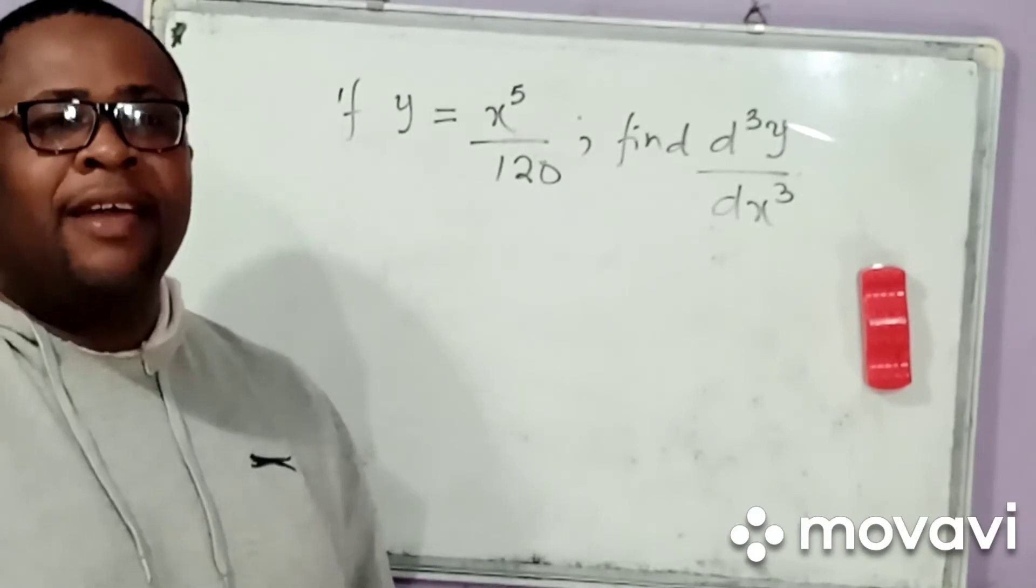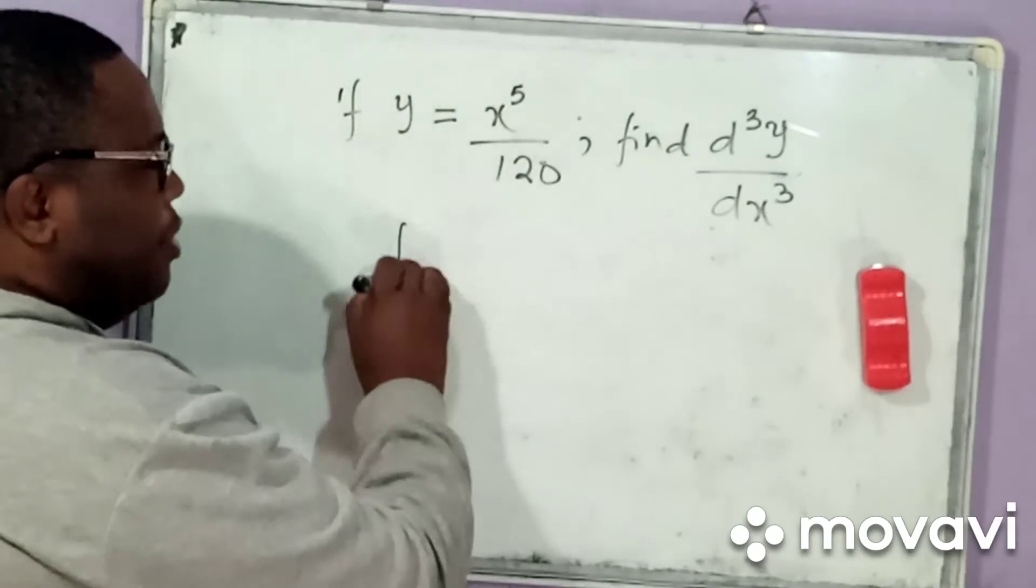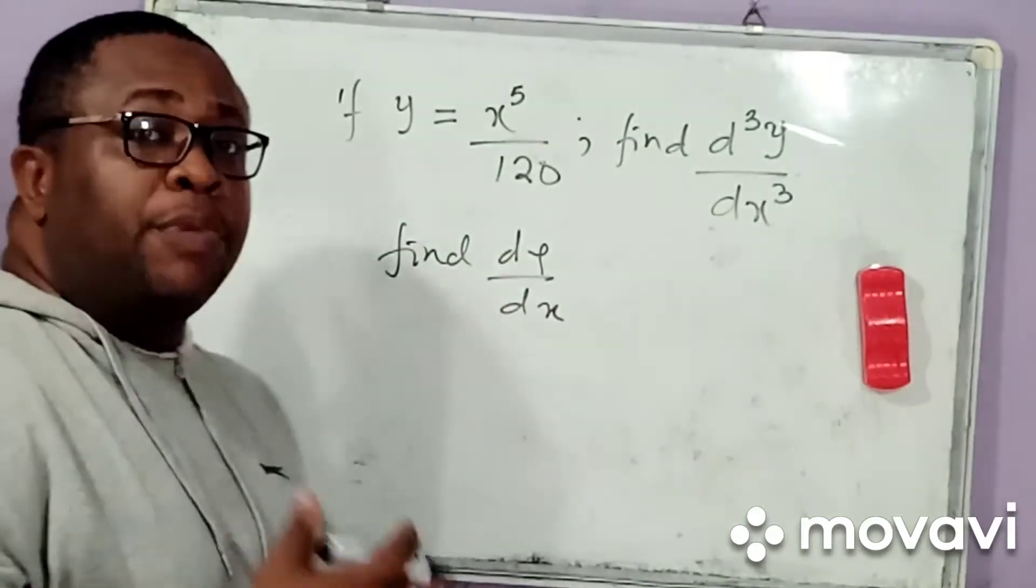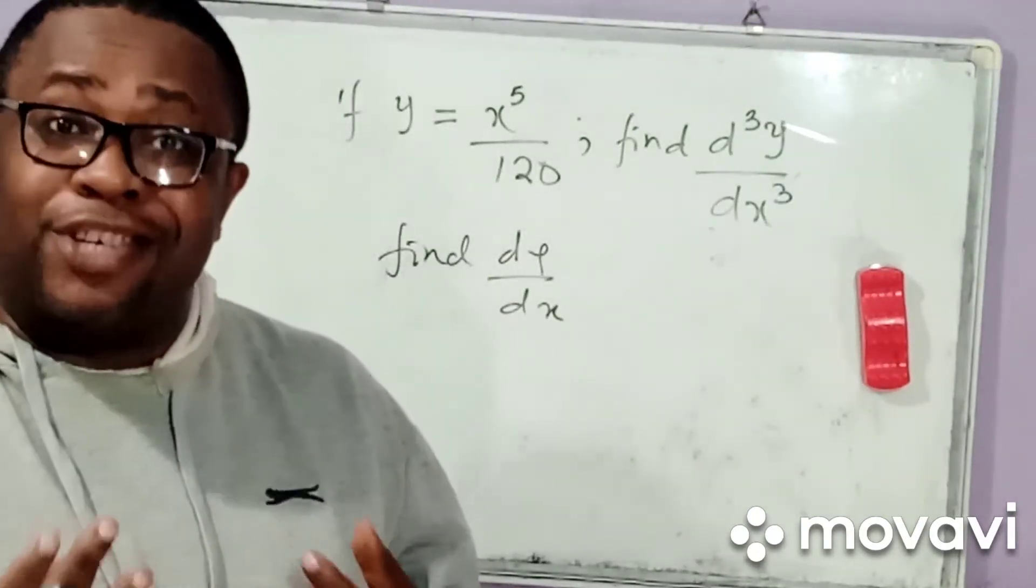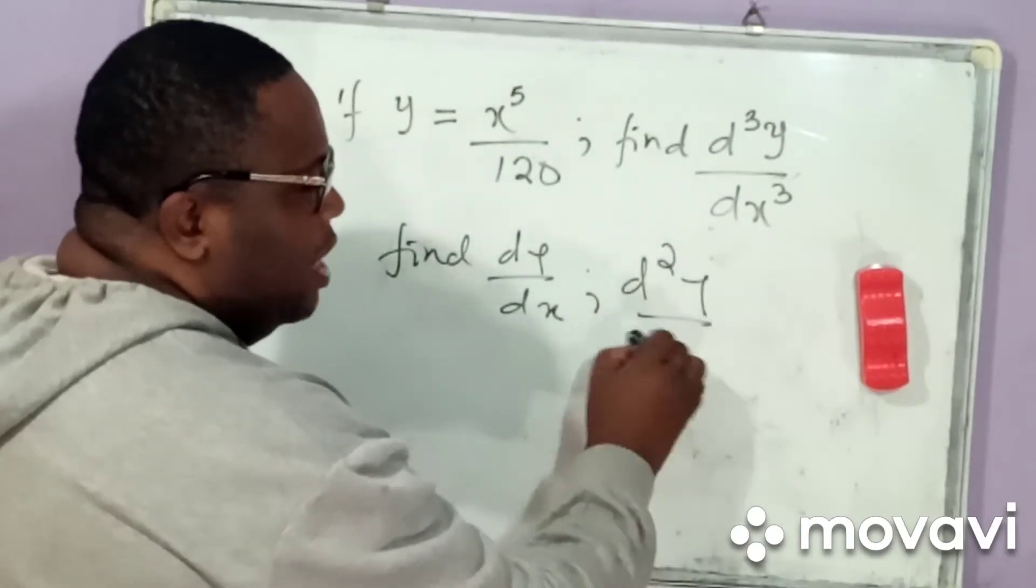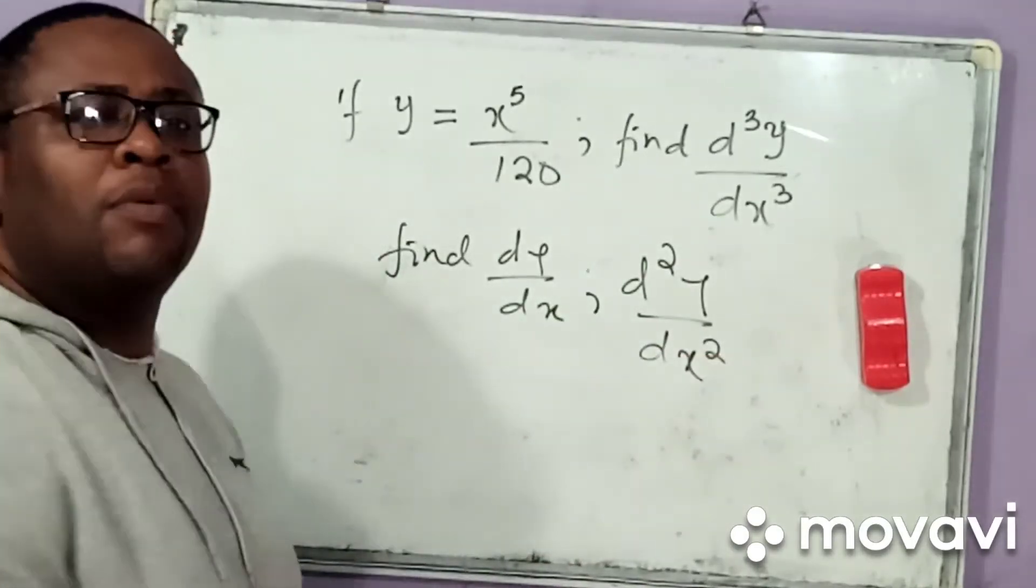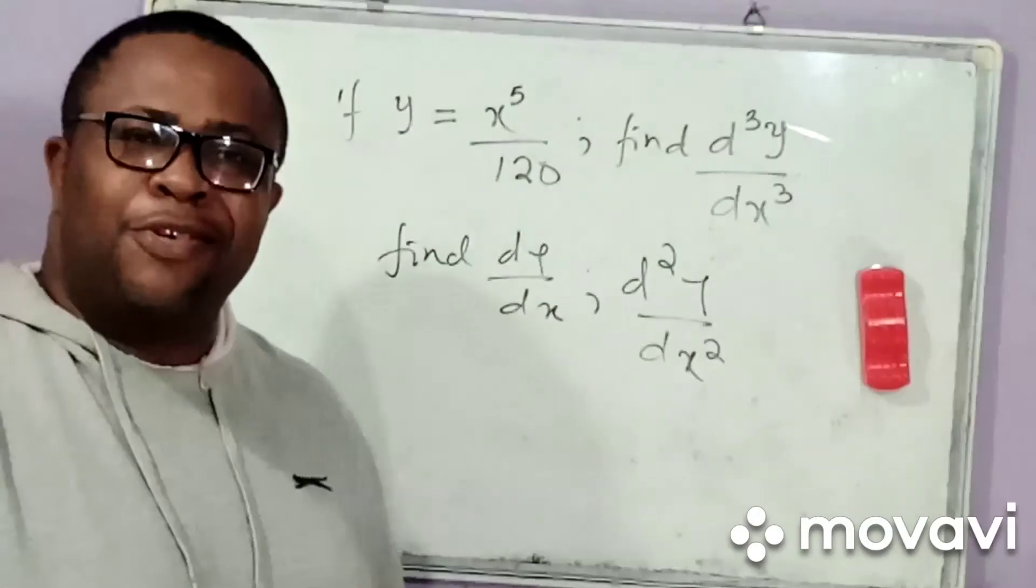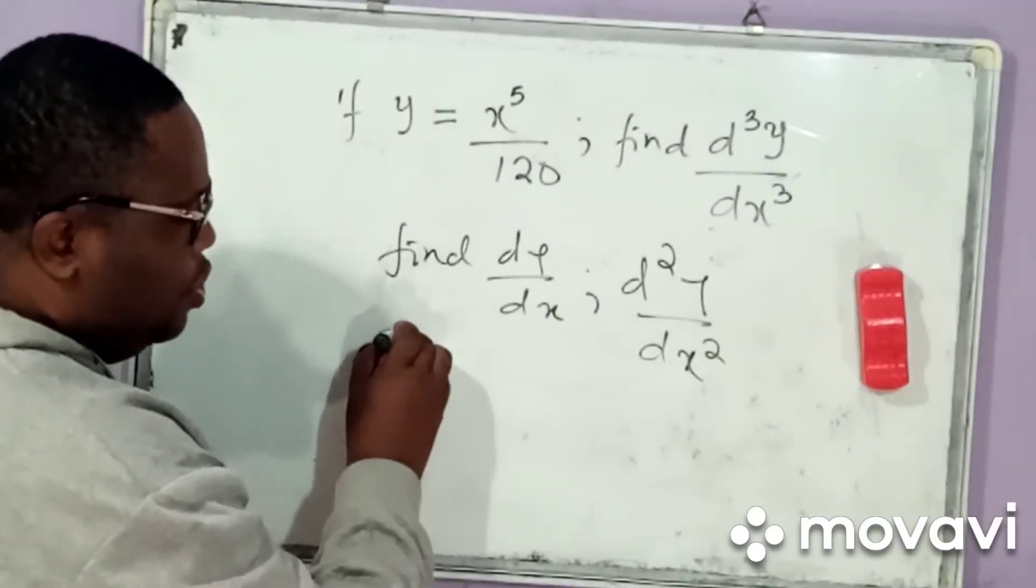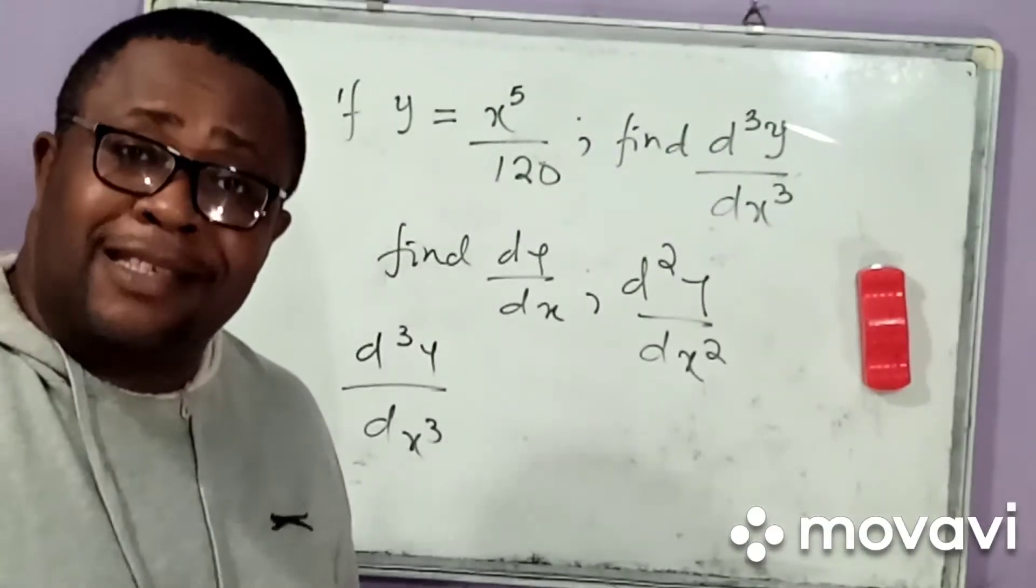Welcome back. Now, whenever they would want you to differentiate once they are simply going to tell you to find dy by dx. Now, if it were to be twice, like they want you to differentiate twice, they will simply ask you to find d squared y by dx squared. What if they wanted you to differentiate three times? Then, they will ask you to find d cubed y by dx cubed. That's simple.